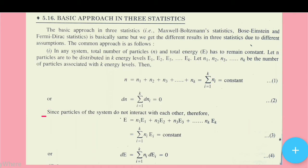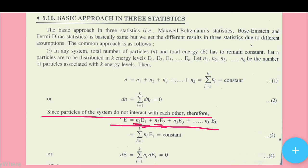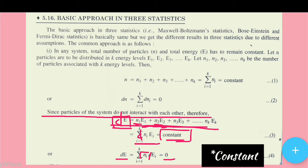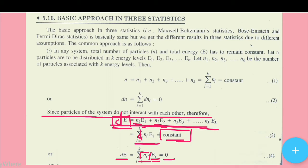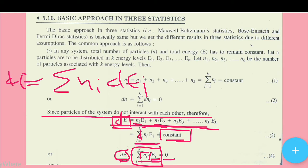Since particles of the system do not interact with each other, the total energy E equals N1·E1 + N2·E2 and so on — summing the product of particle number and energy at each level. This total energy is constant, so differentiation of E equals zero. Differentiating gives summation of Ei·dNi equals zero, which is equation number 4.